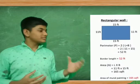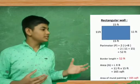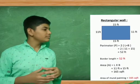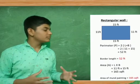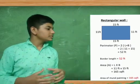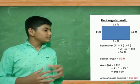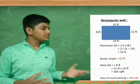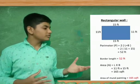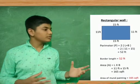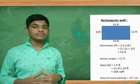We know that the length of the wall is 11 feet and the breadth of the wall is 15 feet. The perimeter of the wall is twice the sum of length and breadth, that is 52 feet. The area of the wall is length into breadth, which is 11 feet into 15 feet, that is 165 square feet. The area of the painting space is 165 square feet and the border length is 52 feet.